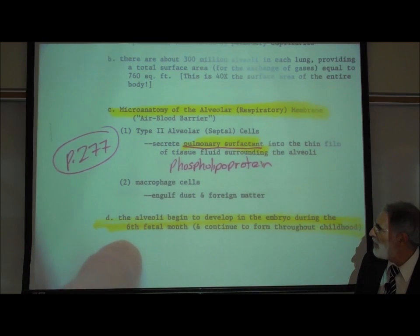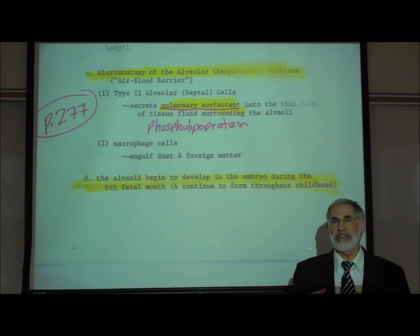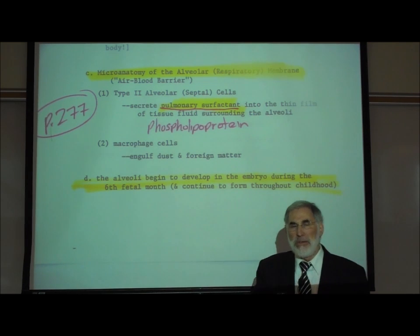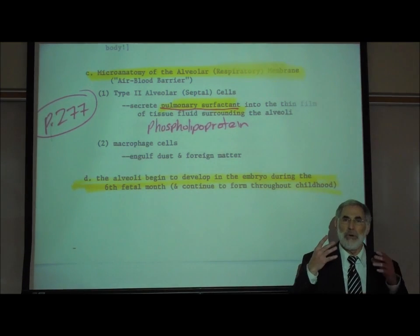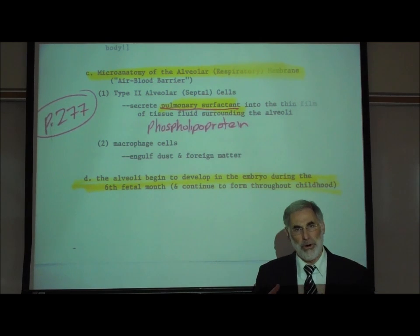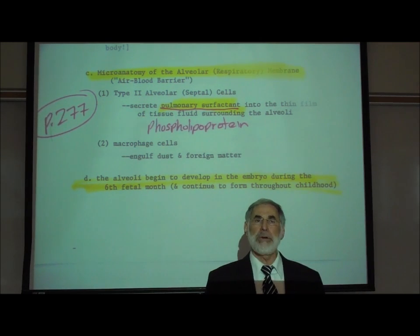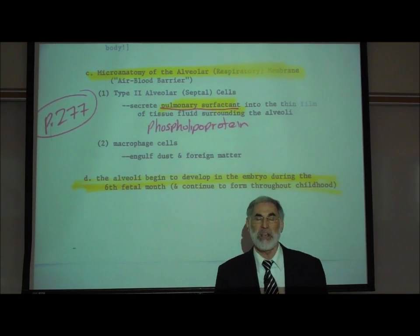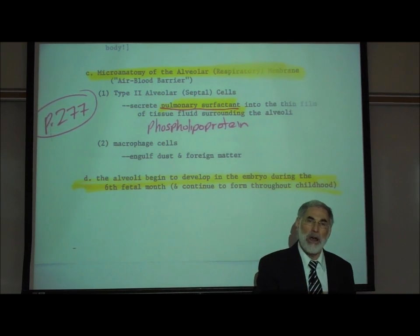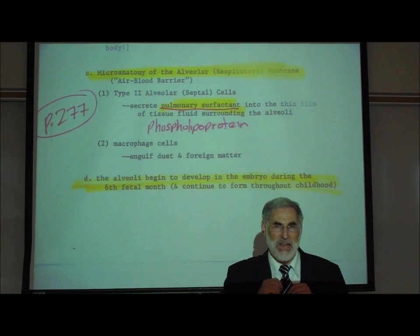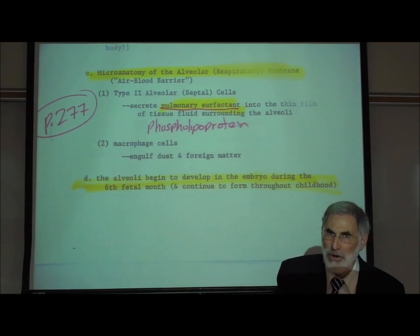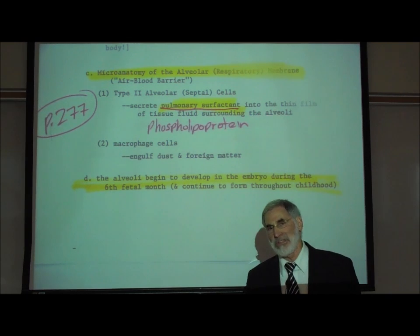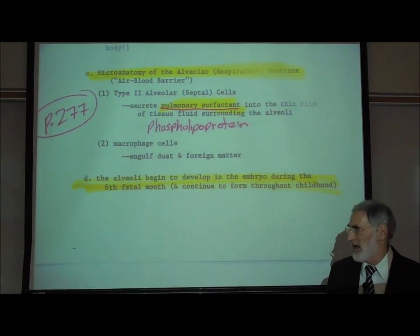The alveoli begin to develop in the sixth fetal month of development. When babies are born premature, the most common problems they experience are respiratory or breathing problems, because the lungs are the last organ to become functional, with alveoli only beginning to form in the sixth month of fetal development.